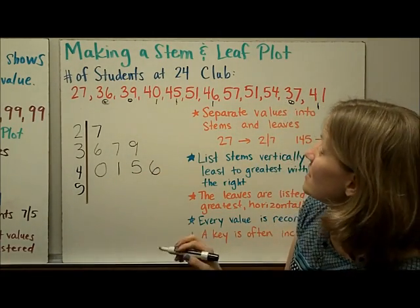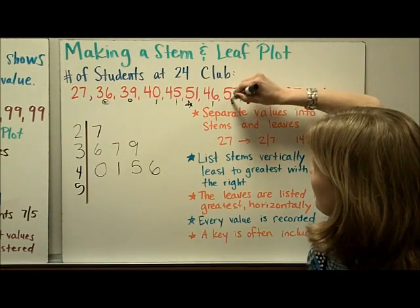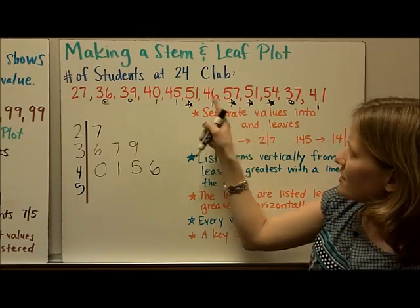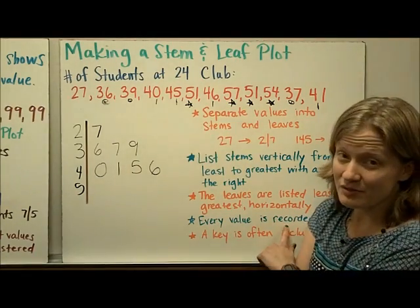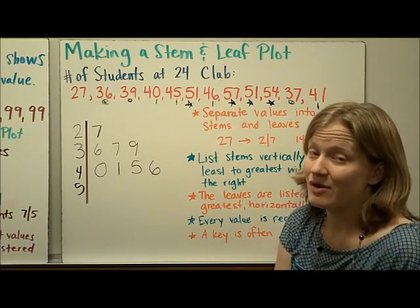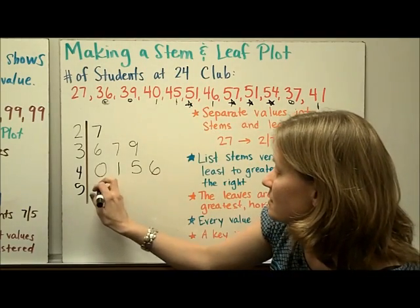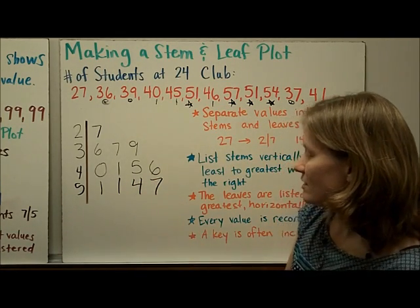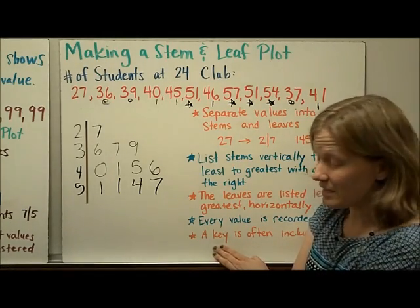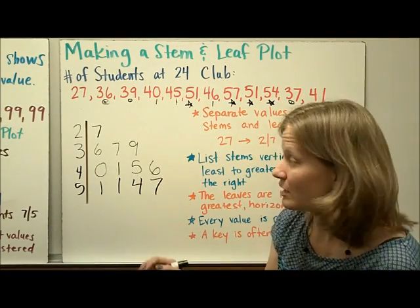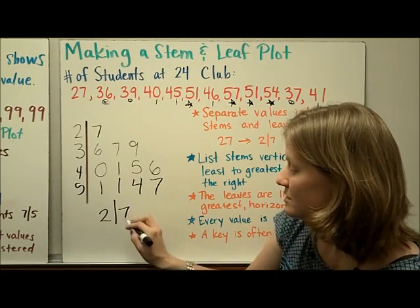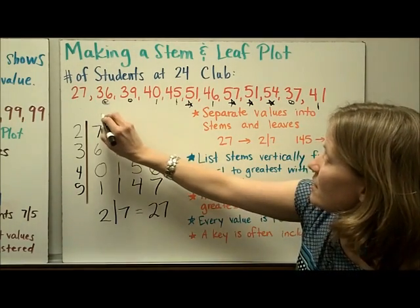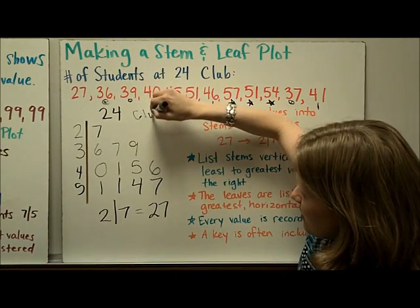Finally, I'm going to look at the 50s and mark those with a star. I have four values there. I also have two 51s — that's my lowest value in the 50s. Remember that every single value is recorded, even repeats, because each represents another piece of data. So I list two 1s, then 54 and 57. I'd also like to include a key — for example, 2|7 represents 27 — and a title: '24 Club Attendance.'